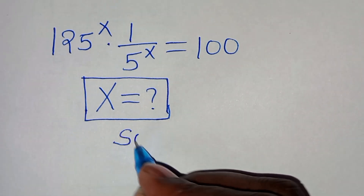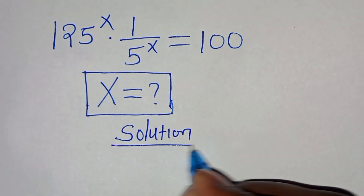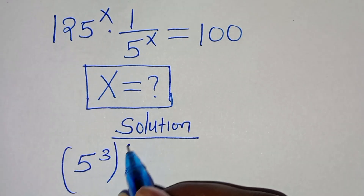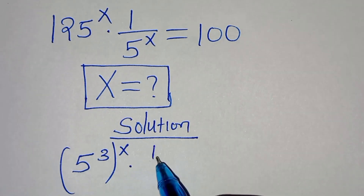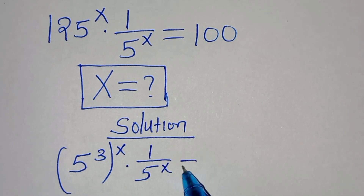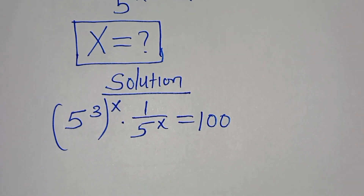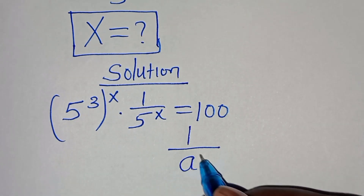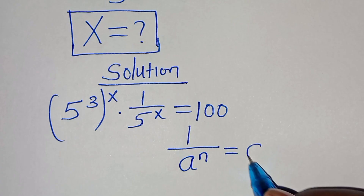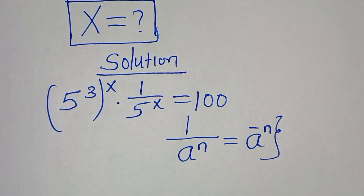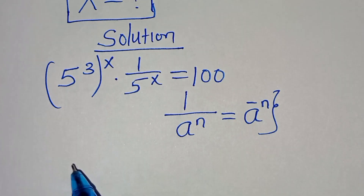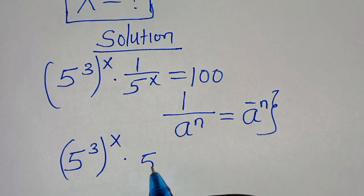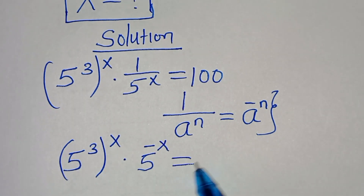Now let's provide a solution. We can express 125 as 5 to the power of 3, raised to the power of x, multiplied by 1 over 5 to the power of x, equal to 100. Now 1 over 5 to the power of x is in the form of 1 over a to the power of n, which we can express as a to the power of minus n. Applying this exponent property, we have 5 to the power of 3 raised to the power of x, times 5 to the power of minus x, equal to 100.